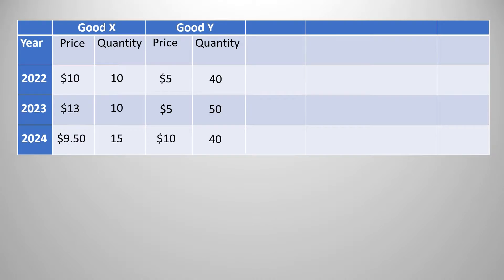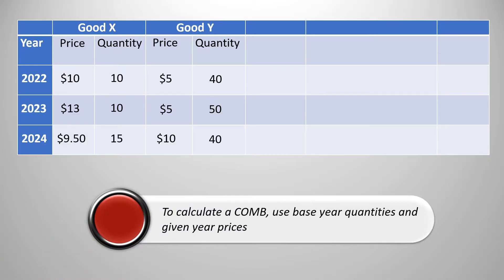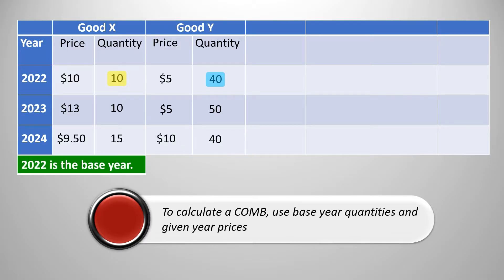Let's imagine a simple economy with a market basket consisting of only two goods. You can see the price and quantity of each good for each year here. What I'm about to say is super important: when you calculate the cost of a market basket, you use the prices of the given year and the quantities from the base year. Remember, we're trying to measure inflation, which is a price change. So we don't want to be distracted by how much the quantity or output changed — we only care about how much the prices changed. So we use the base year quantity as a control. Our base year is 2022, so we'll be using 2022 quantities to calculate our market basket for all three years.